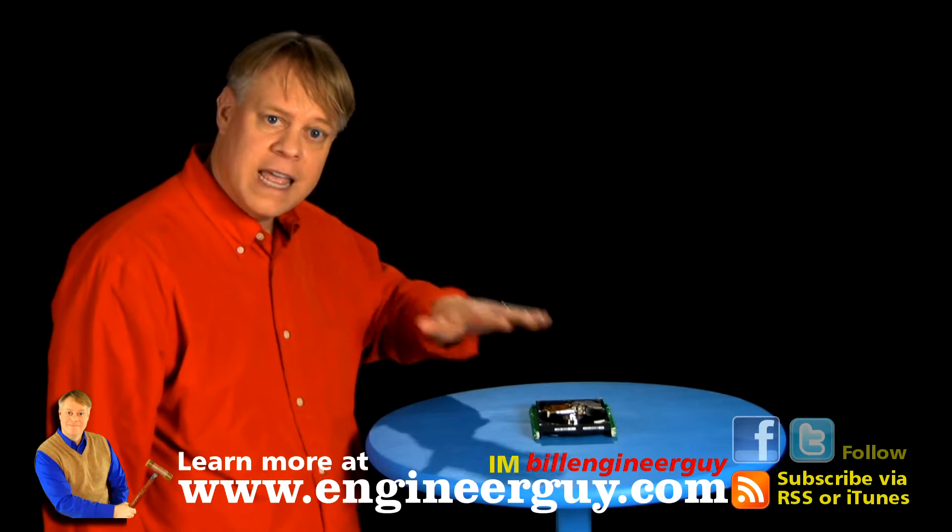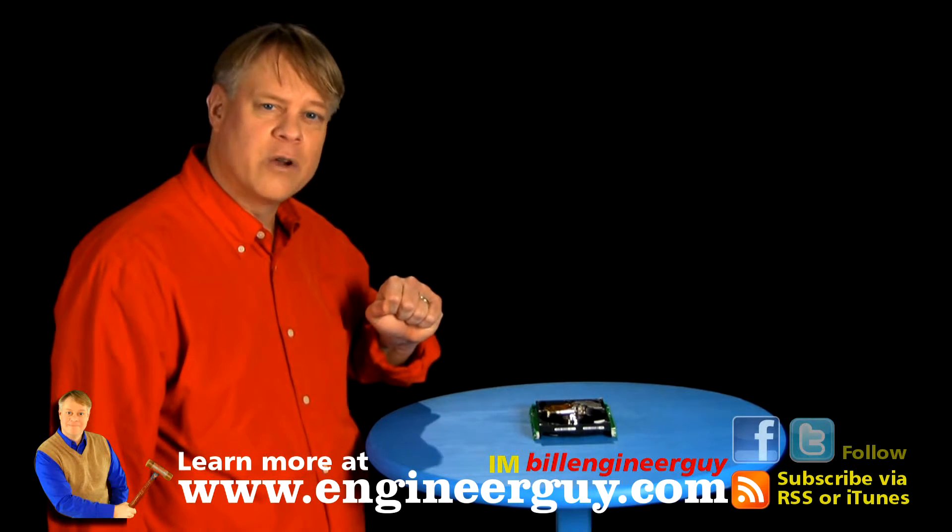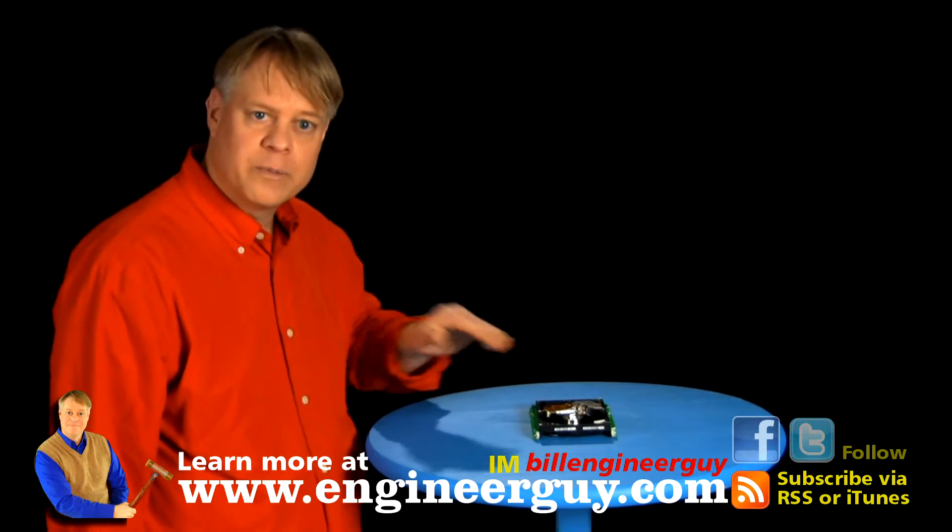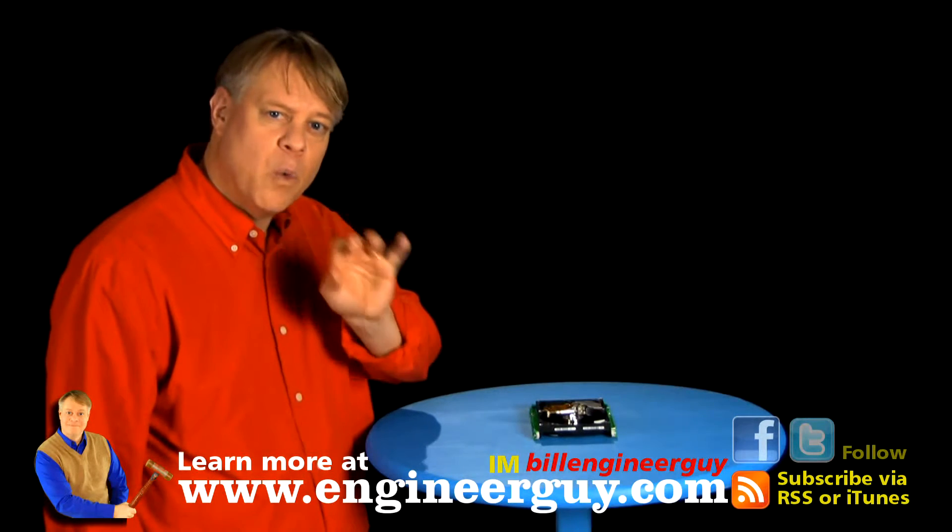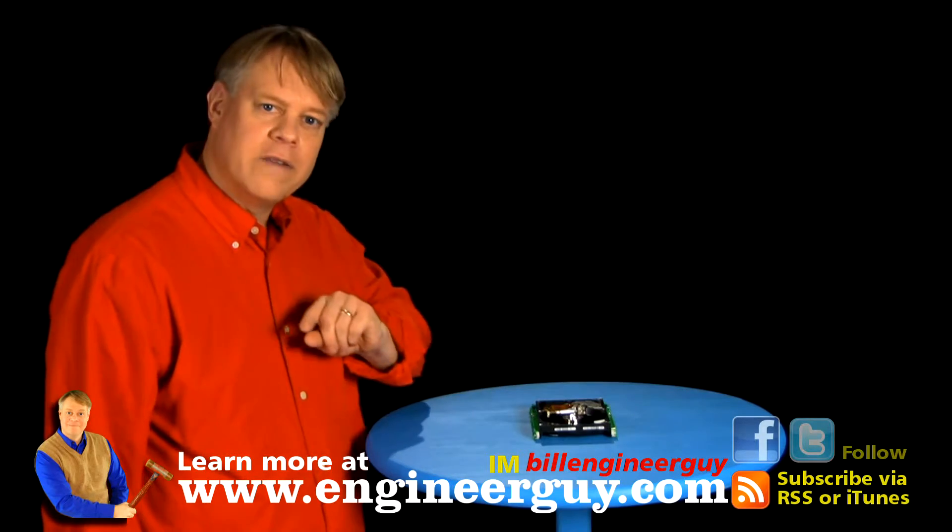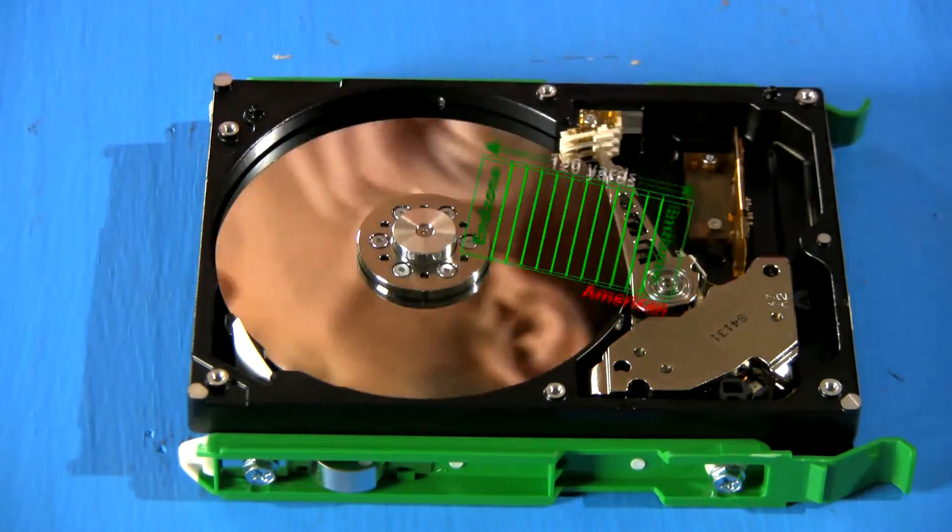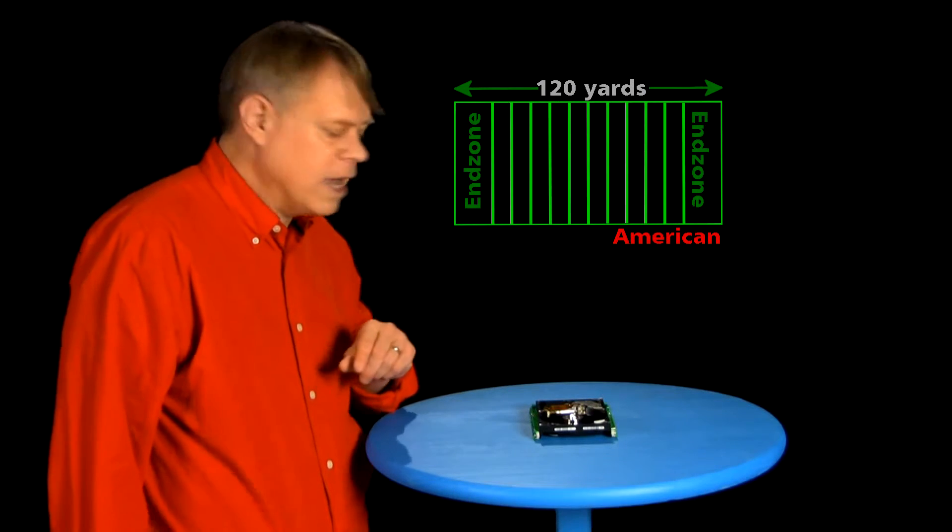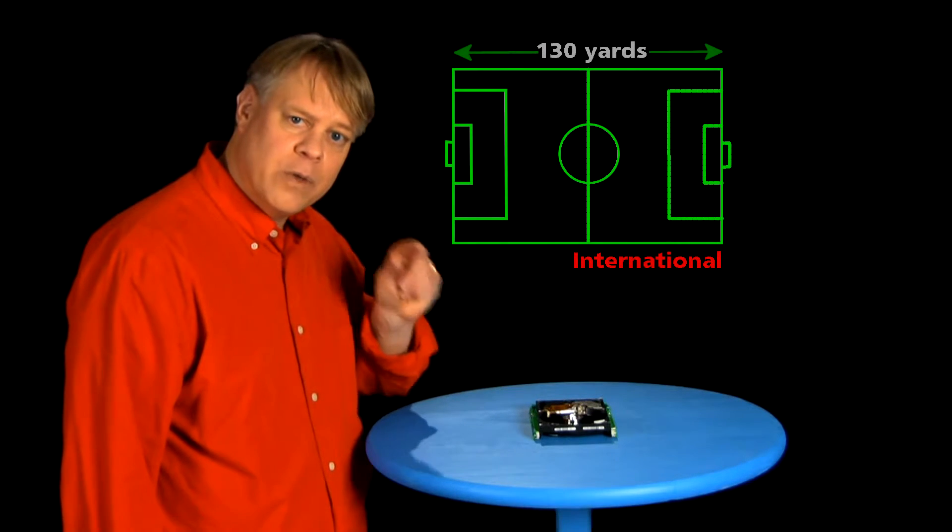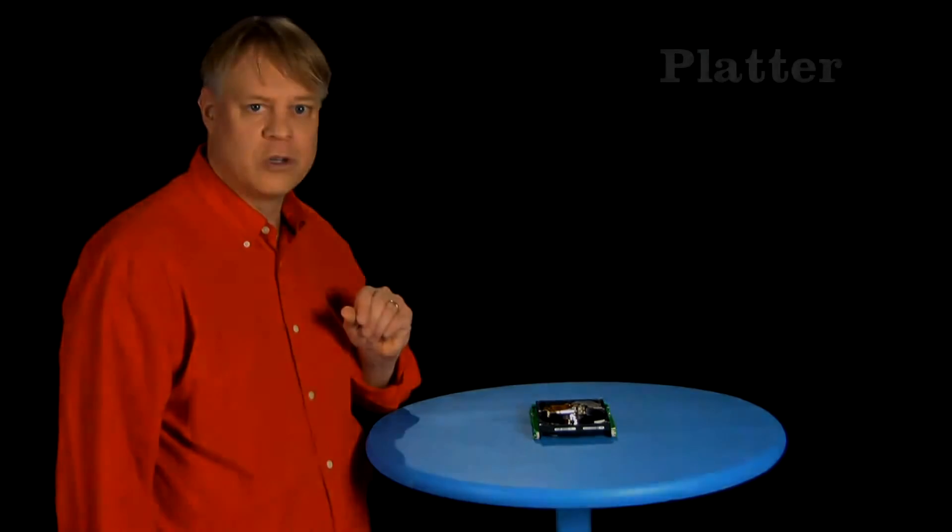To keep the head flying at the right height, the platter is made incredibly smooth. Typically, this platter is so smooth that it has a surface roughness of about one nanometer. To give you an idea of how smooth that is, let's imagine that this section is enlarged until it's as long as a football field. The average bump on the surface would be about three hundredths of an inch.